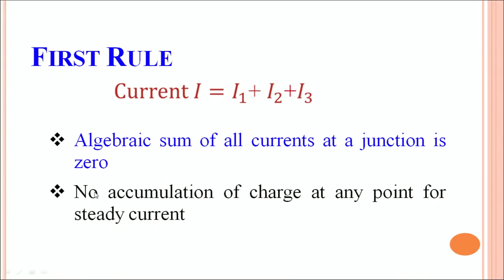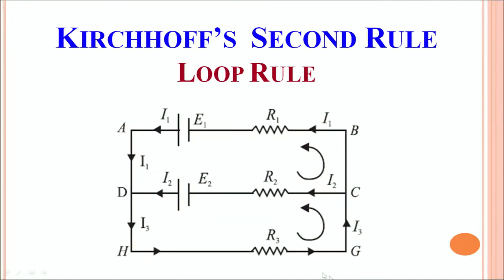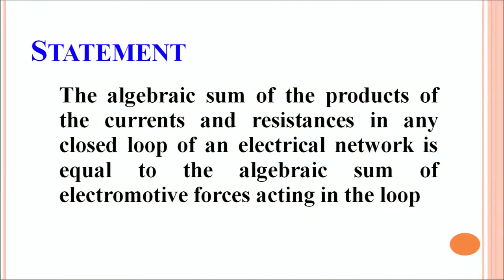The first rule also says that for steady currents, there will be no accumulation of charge at any point in an electrical circuit. Kirchhoff's second rule, also called the loop rule, deals with loops in any electrical circuit. The statement is: the algebraic sum of the products of the currents and resistances in any closed loop of an electrical network is equal to the algebraic sum of electromotive forces acting in the loop. The second rule basically verifies the conservation of energy.